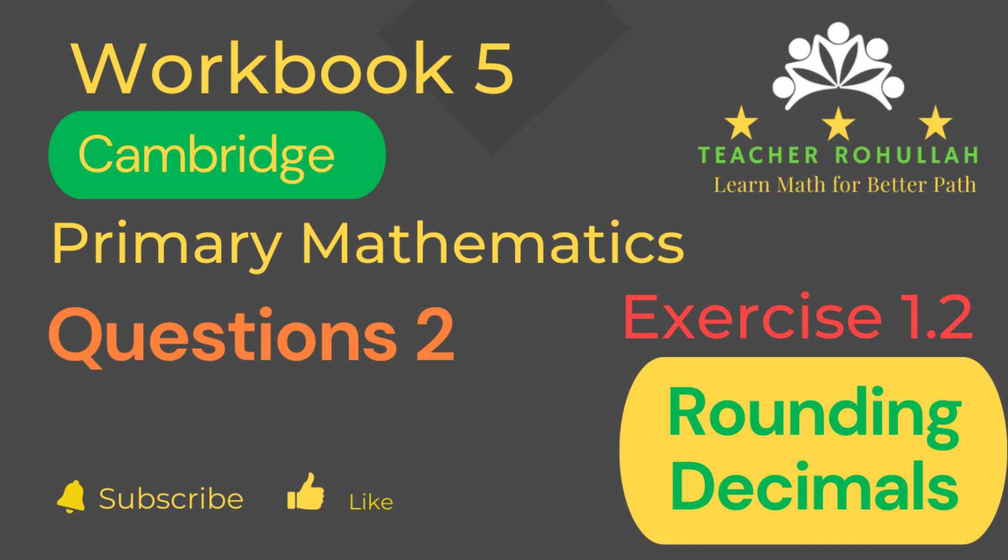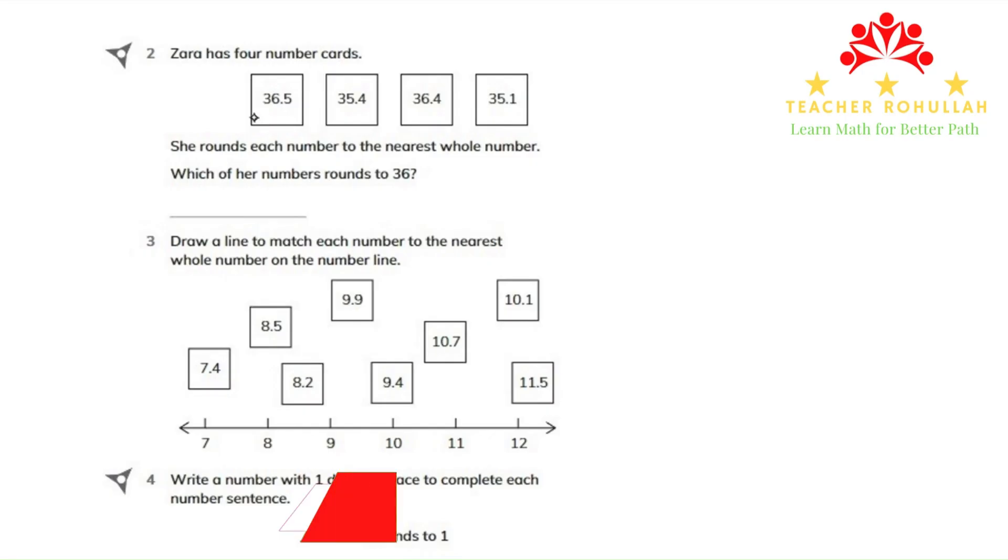Let's now move to the question and solve it. In question number two, it says Zara has four number cards. The first one is 36.5, 35.4, 36.4 and 35.1. It says she rounds each number to the nearest whole number. Which of her numbers round to 36?